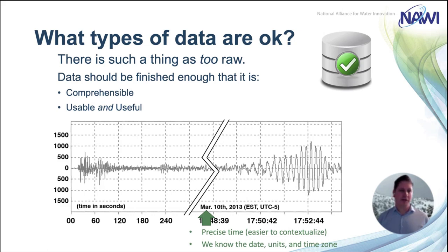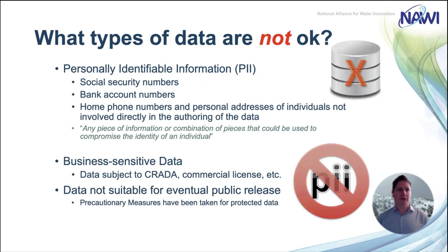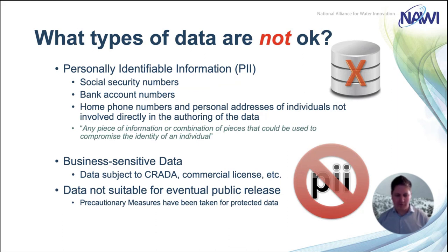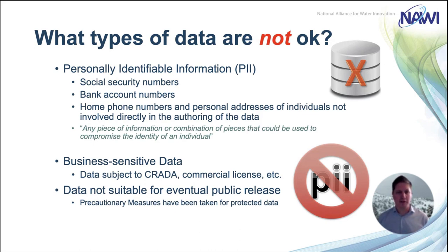What types of data do we NOT want on NAWI Water DAMS? We don't want any personally identifiable information — no social security numbers, bank account numbers, home phone numbers, or personal addresses. There's always some confusion about contact info: somebody's publicly available contact info is fine, and we actually require a point of contact for each data set in case users have questions. Business email addresses are fine, but no personal or personally identifiable information. We also don't want any business-sensitive information.